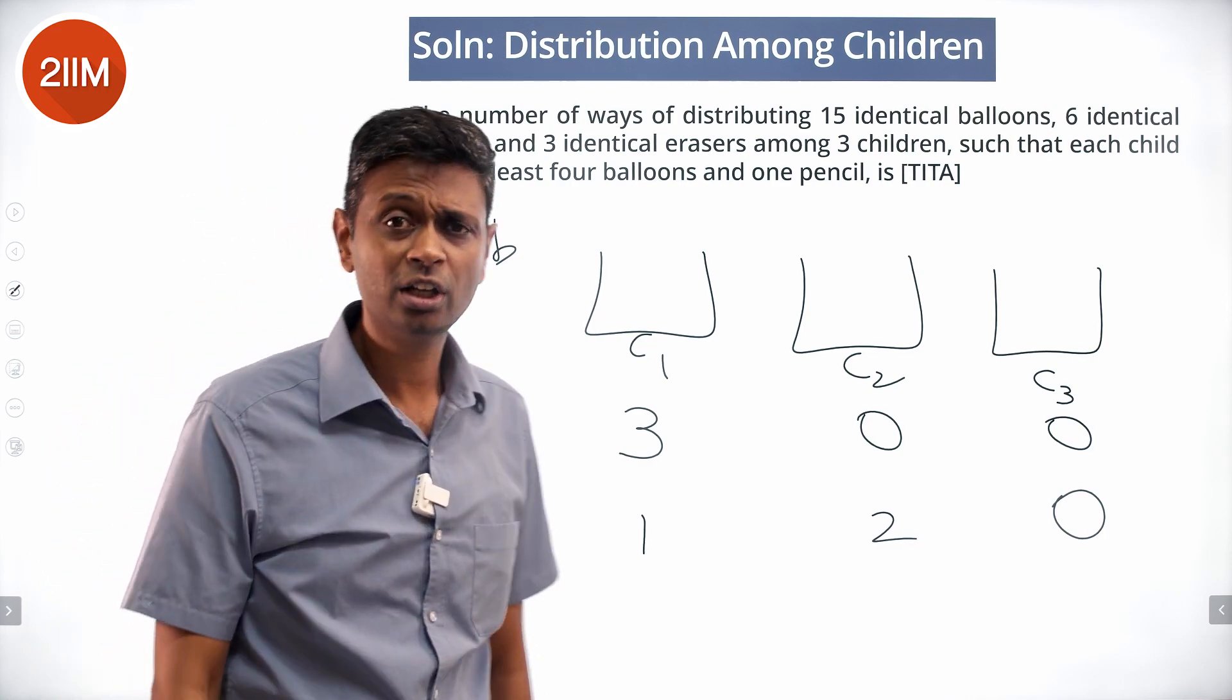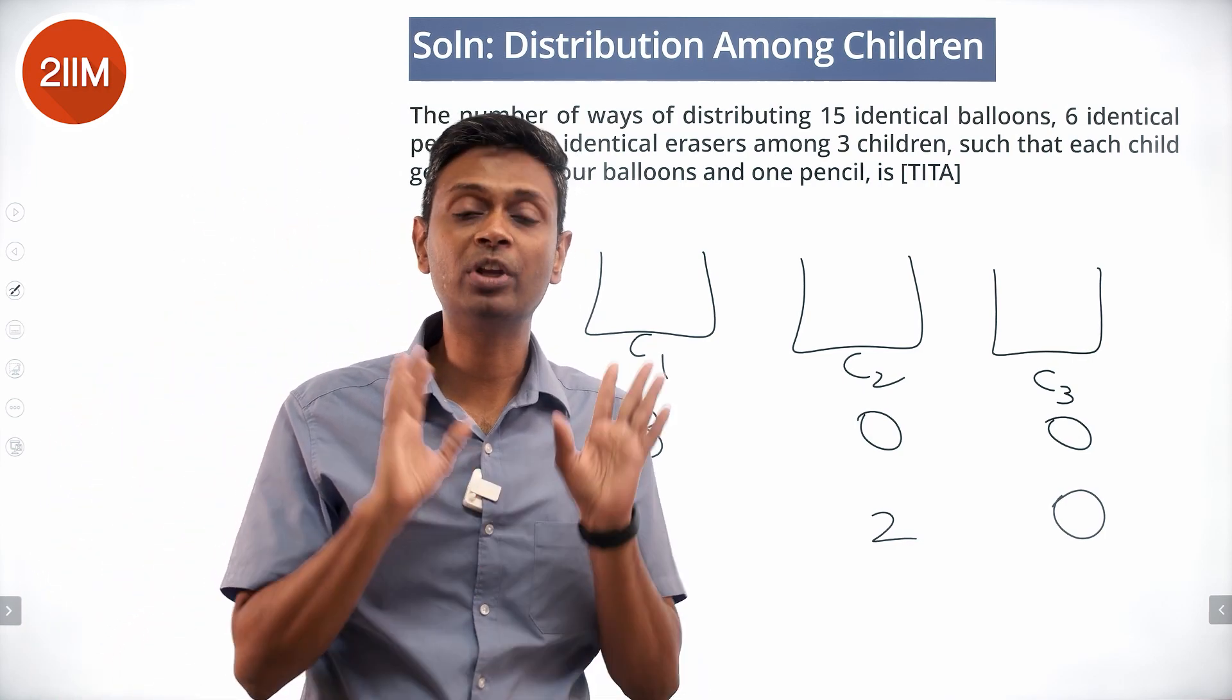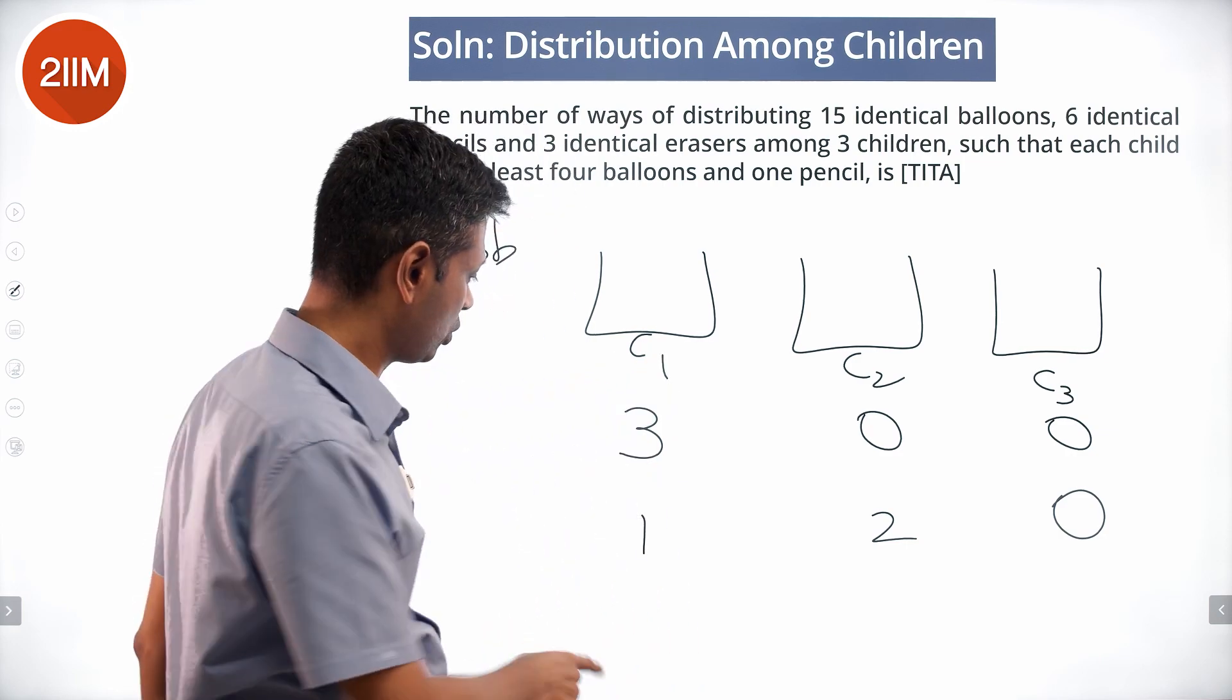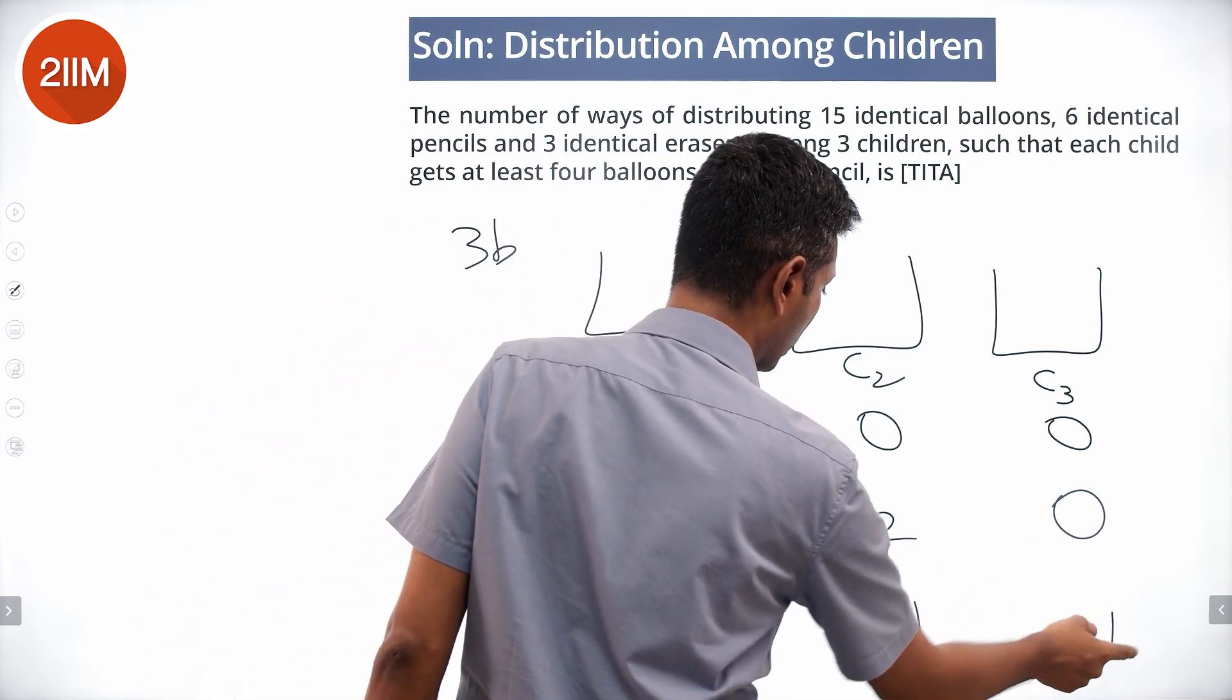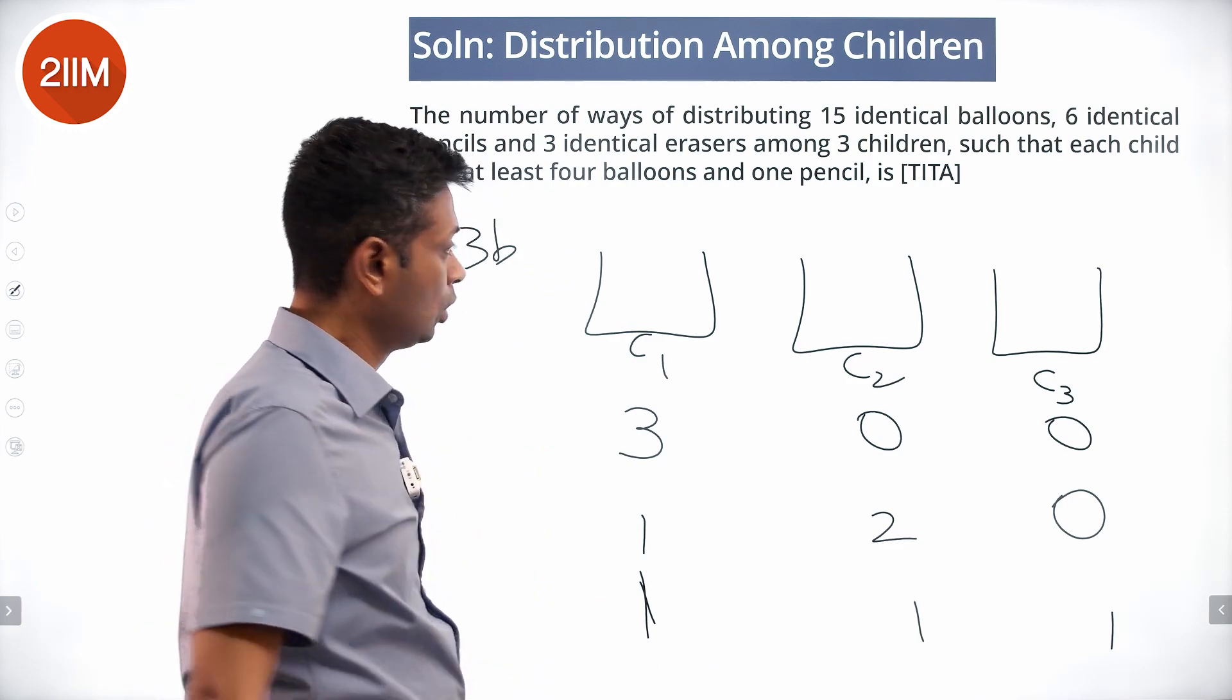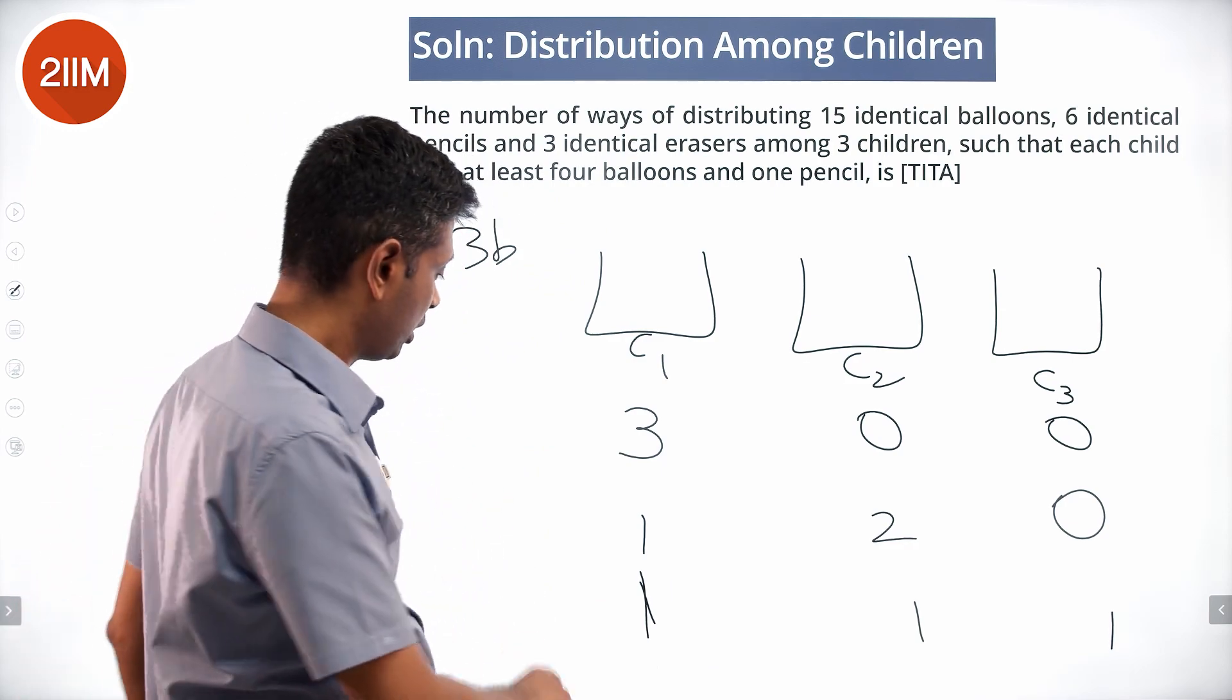Now the third combination, everybody gets something. Nobody gets 0. That means it's got to be 1, 1, 1. One balloon, one balloon, one balloon can be done in only one way.